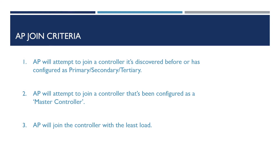Lastly, step three: if the AP doesn't find a controller in its list that's been configured as primary, secondary, or tertiary, a controller it's joined before, or a controller with master controller mode enabled, it will attempt to join the wireless LAN controller with the least number of APs associated. It will do this to load balance the APs and avoid all APs connecting to one controller, causing a single point of failure. The AP determines the least loaded controller using the reported load information from the discovery phase.